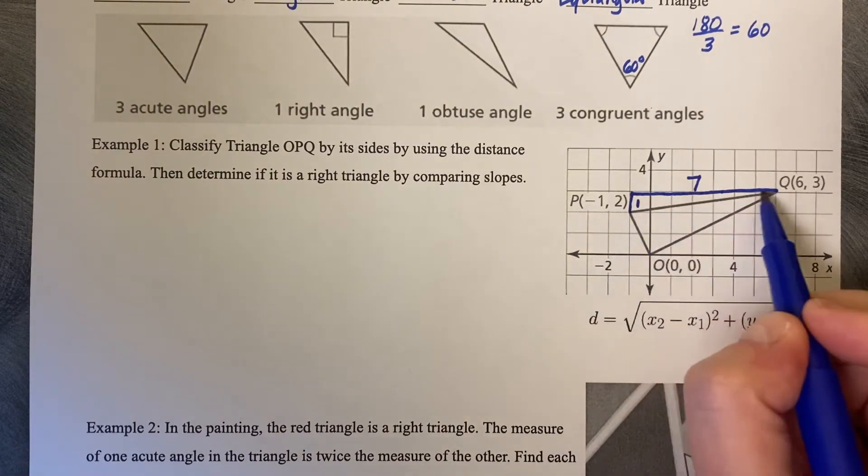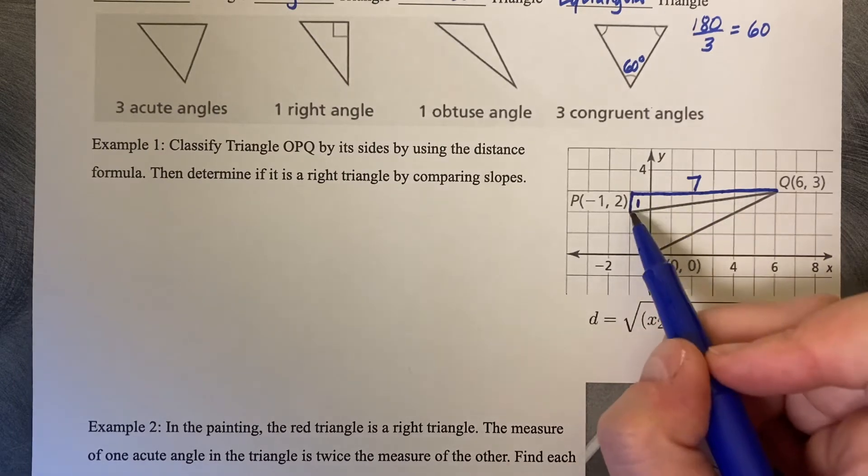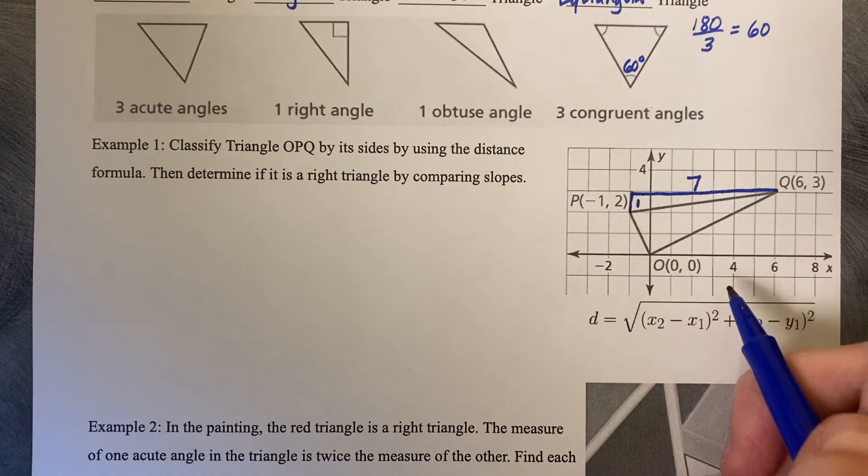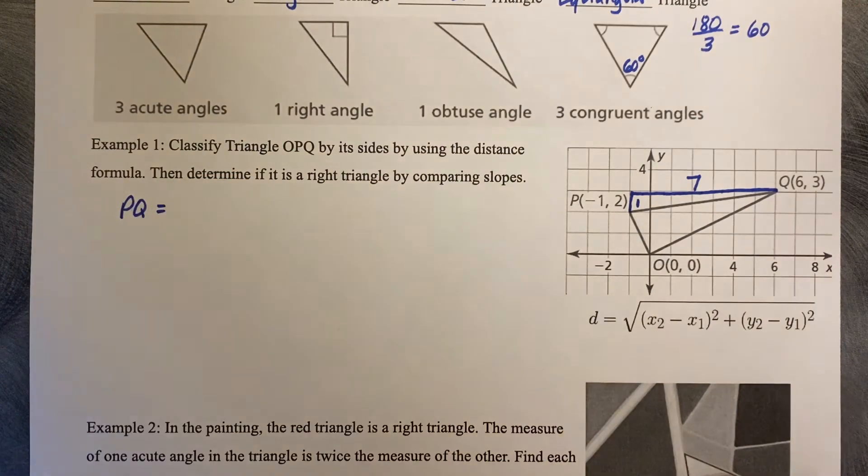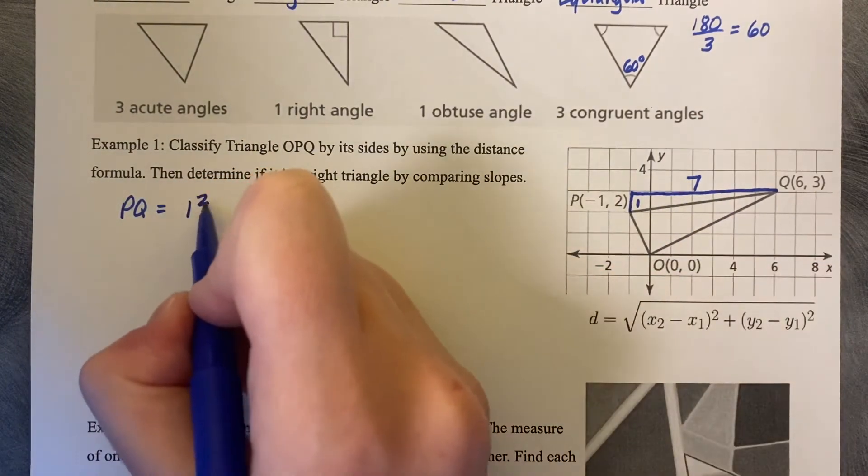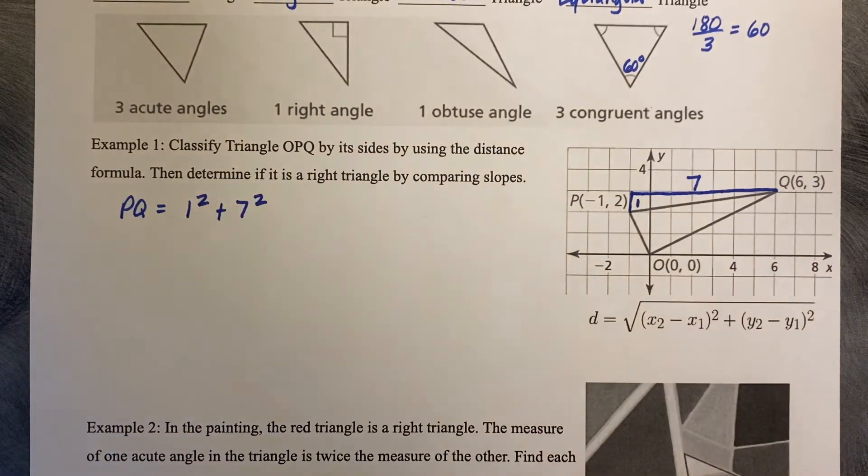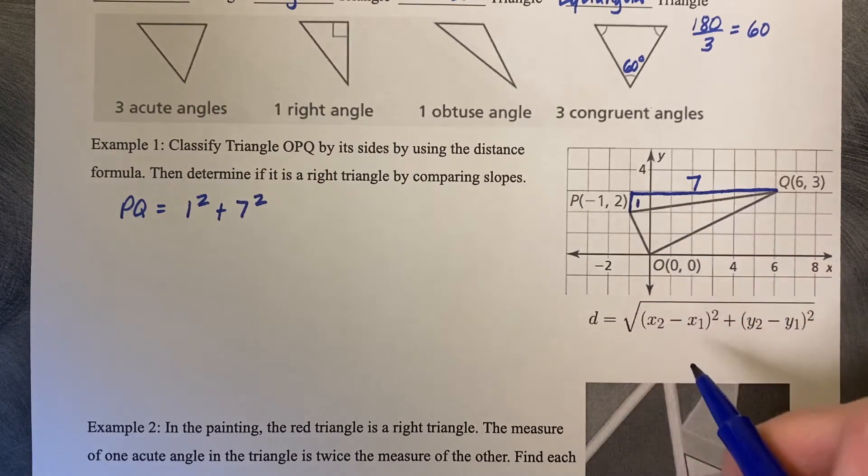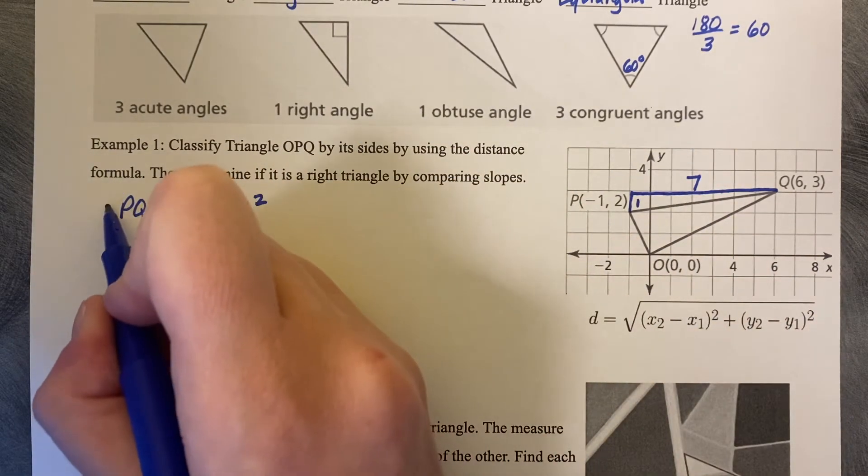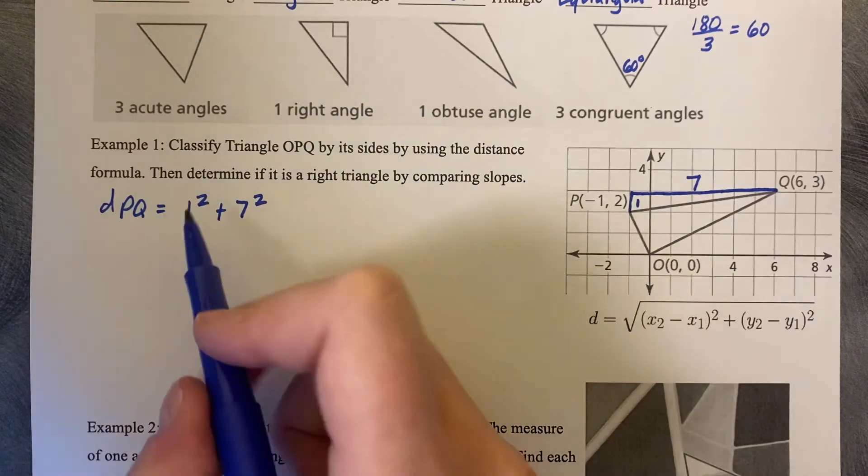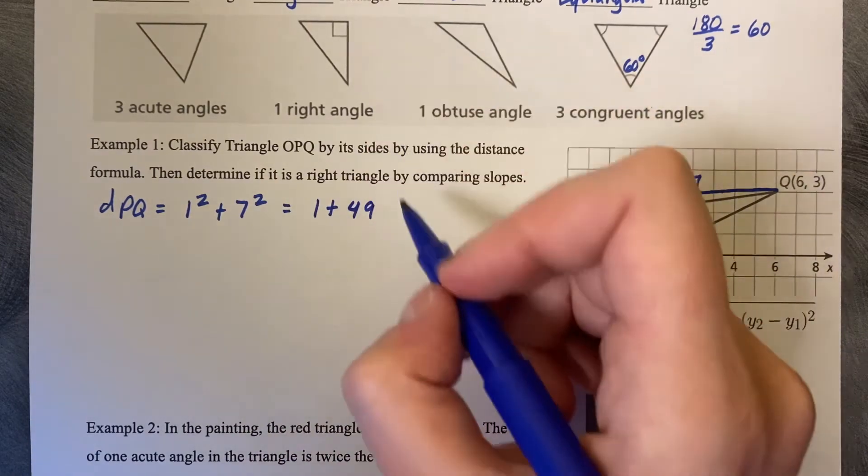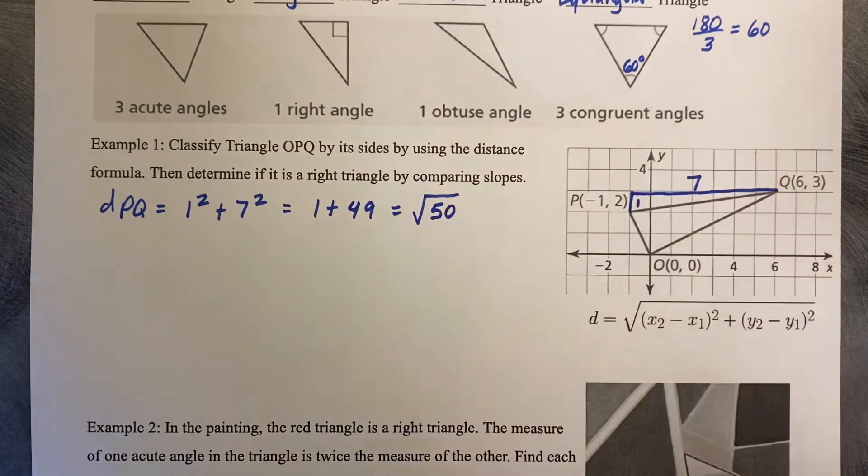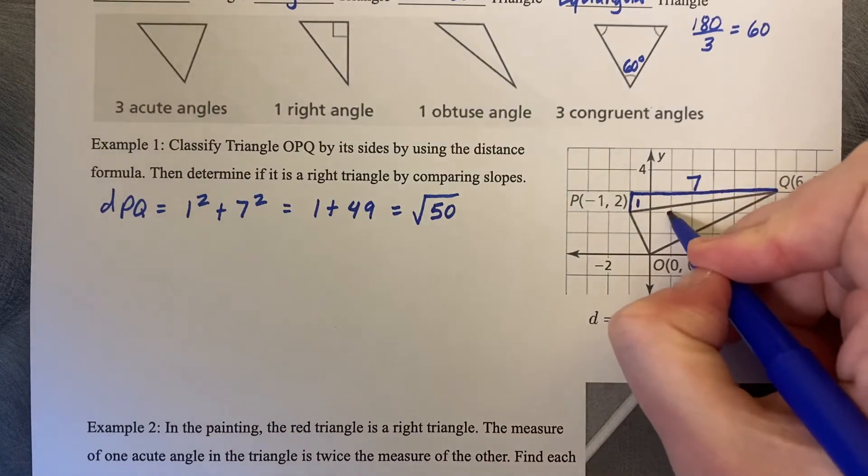So what you've done is you've drawn in a right triangle that will help you find the distance of that third side, because what you've done is made a triangle with two legs and a hypotenuse. So if we want to find the length of PQ, we just use Pythagorean theorem, one squared plus seven squared. The distance of PQ is going to be one squared plus seven squared. One squared is one, seven squared is 49, so the square root of 50. We're just trying to compare the length, so the length of this is the square root of 50.